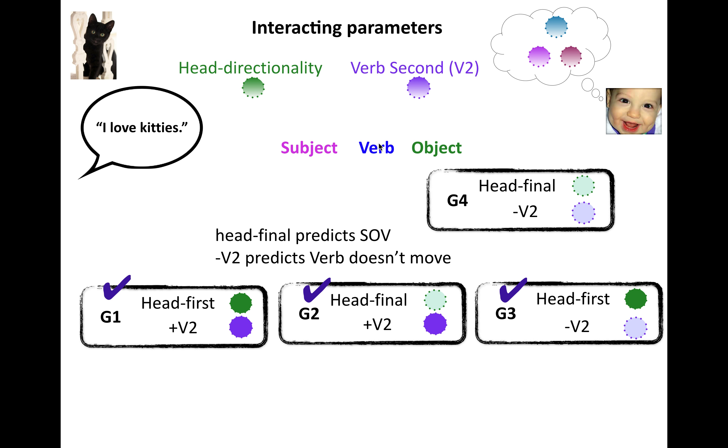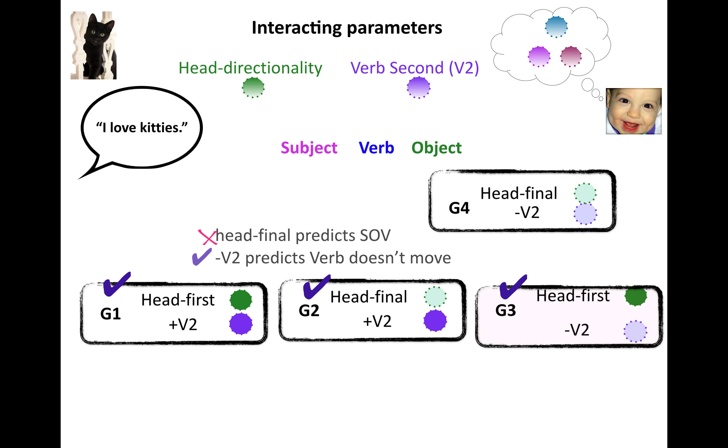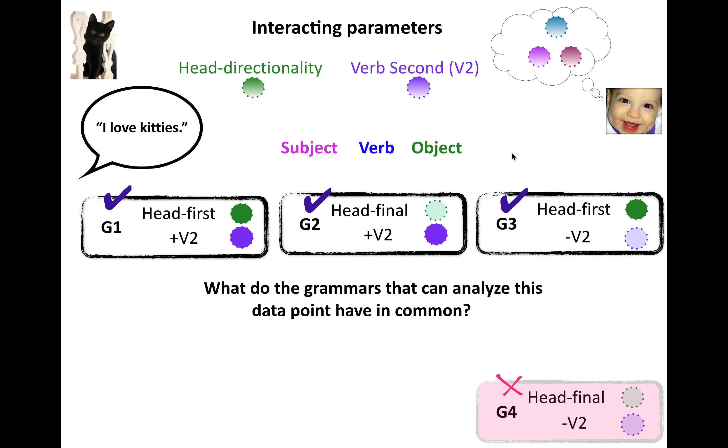What about grammar four? So head final predicts subject, object, verb, and verb second minus verb second means we don't move anything. Well, if you start with subject, object, verb, and you don't move anything, you can't get here, right? You can't, there's nothing that will allow you to change that order. So this grammar actually is the only one that's not compatible. And it's become not compatible because it's predicting subject, object, verb order, right? So, okay, so we have three that work, one that doesn't, fantastic.